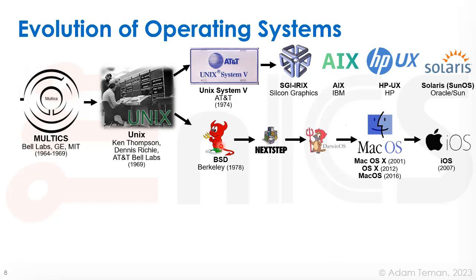On top of BSD, many different things were built. One was a project called NeXT that Steve Jobs started when he left Apple. They built machines and an operating system called NeXTSTEP, built on top of BSD. It evolved into Darwin OS, which was one of the early operating systems of Apple, and eventually turned into Mac OS X — rebranded as OS X, then Mac OS — and also turned into iOS for Apple's portable devices.